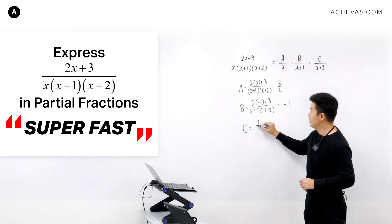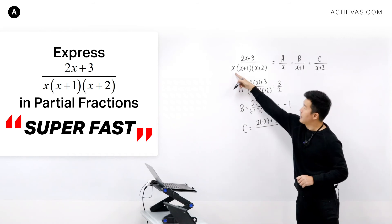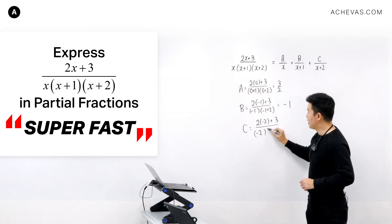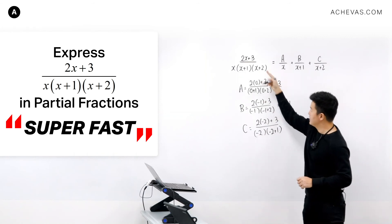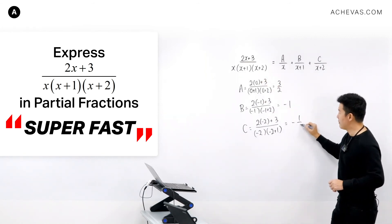So C is going to be equal to 2 times minus 2 plus 3 divided by minus 2 multiplied by minus 2 plus 1. And I'm ignoring this, and C is going to be equal to minus half.